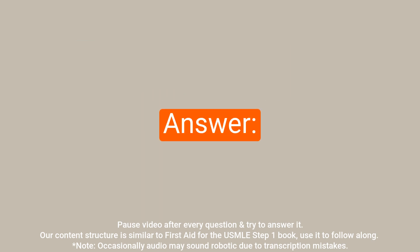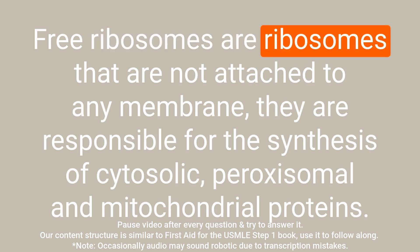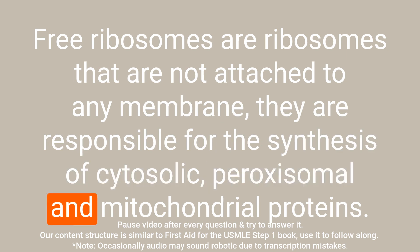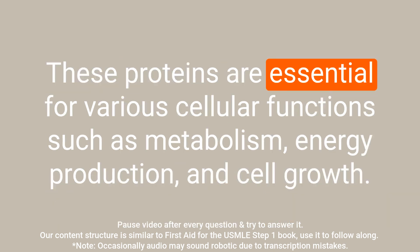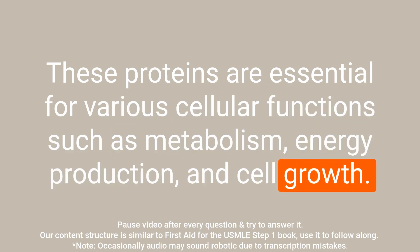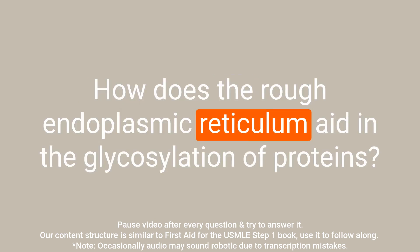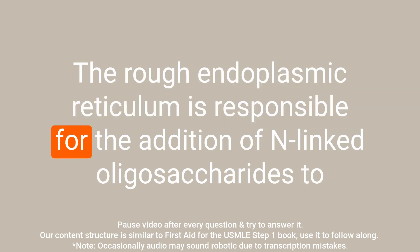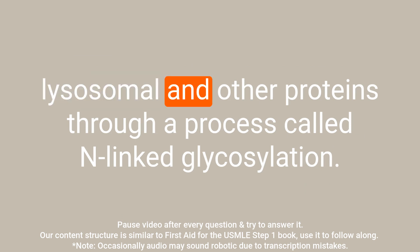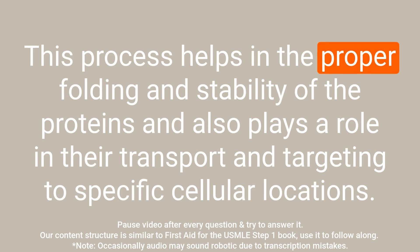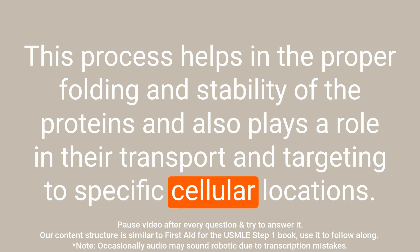Question: What are the functions of free ribosomes? Answer: Free ribosomes are ribosomes not attached to any membrane. They are responsible for the synthesis of cytosolic, peroxisomal, and mitochondrial proteins — essential for cellular functions such as metabolism, energy production, and cell growth. Question: How does the rough endoplasmic reticulum aid in the glycosylation of proteins? Answer: The rough endoplasmic reticulum is responsible for the addition of N-linked oligosaccharides to lysosomal and other proteins through N-linked glycosylation. This process helps in the proper folding and stability of proteins and plays a role in their transport and targeting to specific cellular locations.